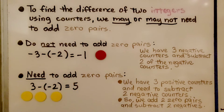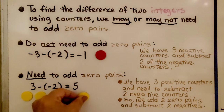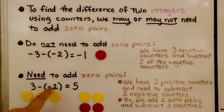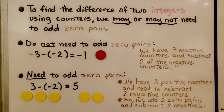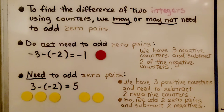Here we will need to add zero pairs. We have positive three, so we have three positive counters, and we need to take away two negative counters. But we don't have any negative counters, so we add zero pairs: one positive, one negative; one positive, one negative. Now we take away these two negative ones to represent negative two, and we're left with five positive counters. We had three positive counters, needed to subtract two negatives, added two zero pairs, and subtracted those two negatives. The difference is positive five.